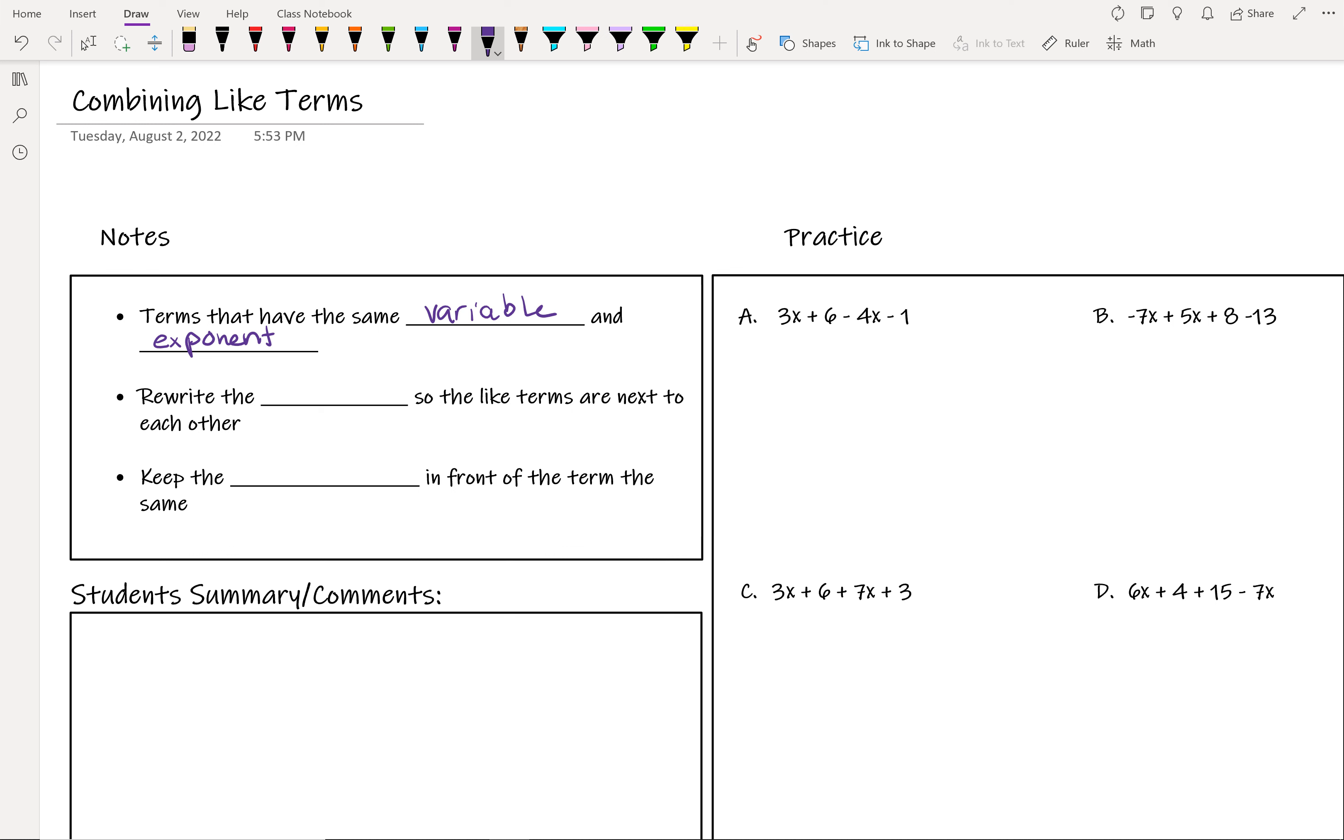The easiest way to work on combining like terms is to first rewrite the expression, so whatever algebra expression you have, so that the like terms are next to each other.